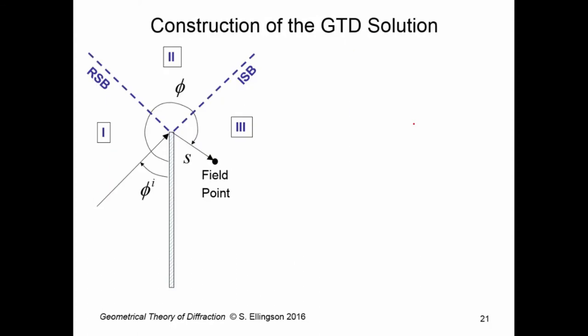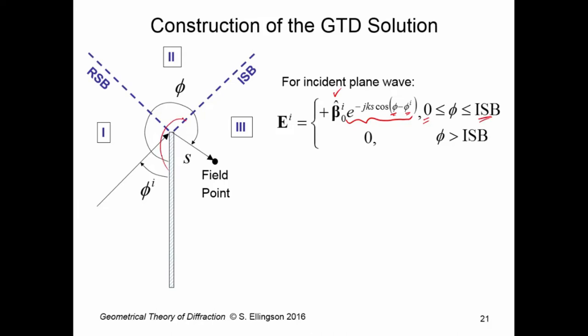So let's construct this solution. For the incident plane wave, we can write it in a relatively simple way. Beta naught super i hat. Here is a way of writing the phase factor. You can easily derive this on your own. I will not walk you through it. But you see in terms of the coordinates we're using, φ, that this is what it is. That expression applies from φ equals zero to the incident shadow boundary. In other words, from here all the way to here is where we get a non-zero incident field. And then once we pass the incident shadow boundary, the incident field becomes zero.